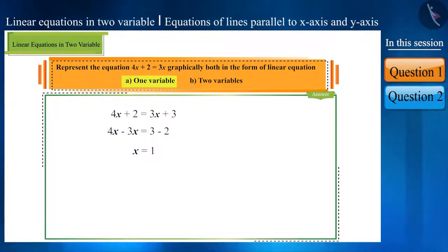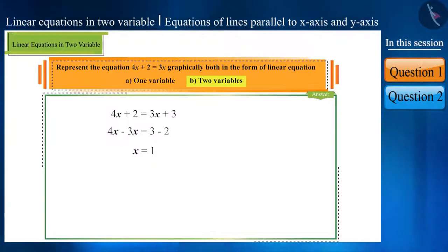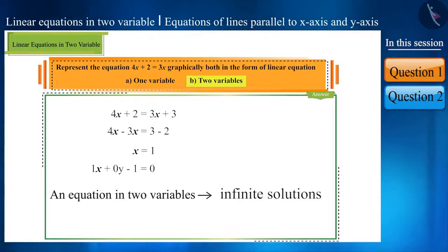As we know that linear equations in one variable have a unique solution and we represent them on a number line. Here, x is equal to 1 will be here on the number line. We can represent this equation in the form of linear equations in two variables as 1x plus 0y minus 1 is equal to 0 and we will get infinite solutions for this.